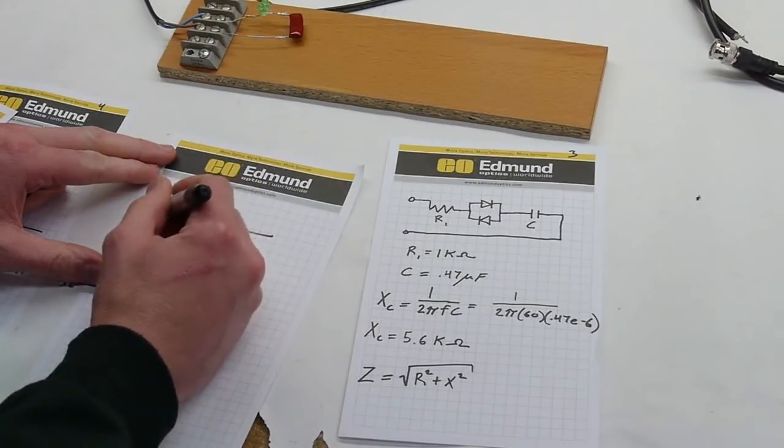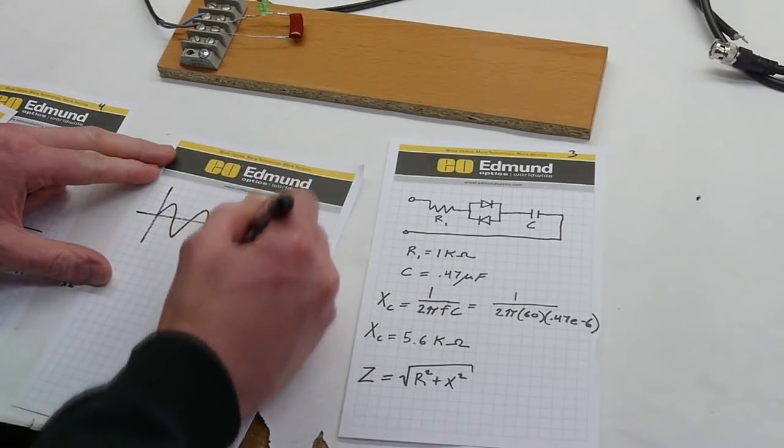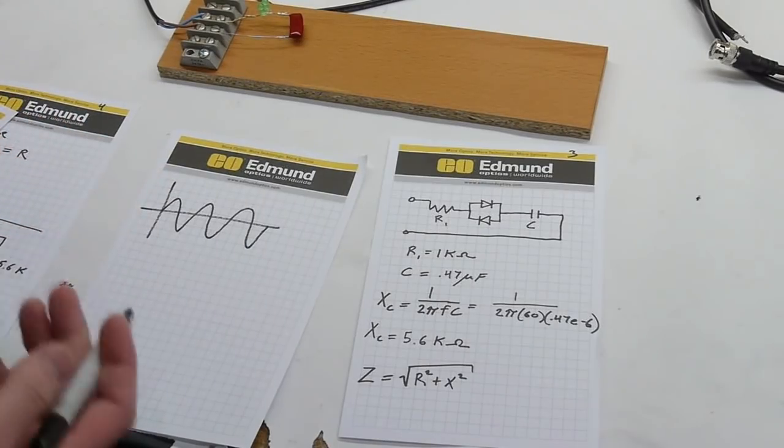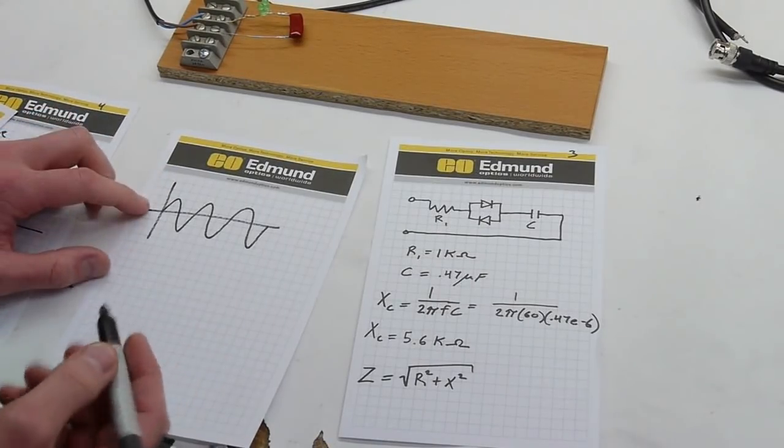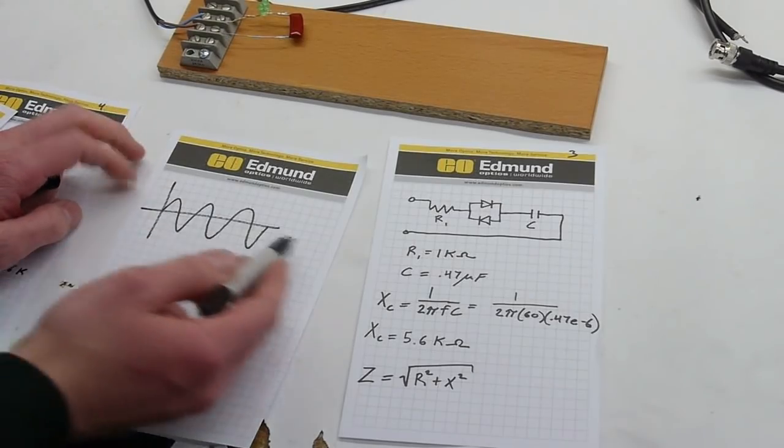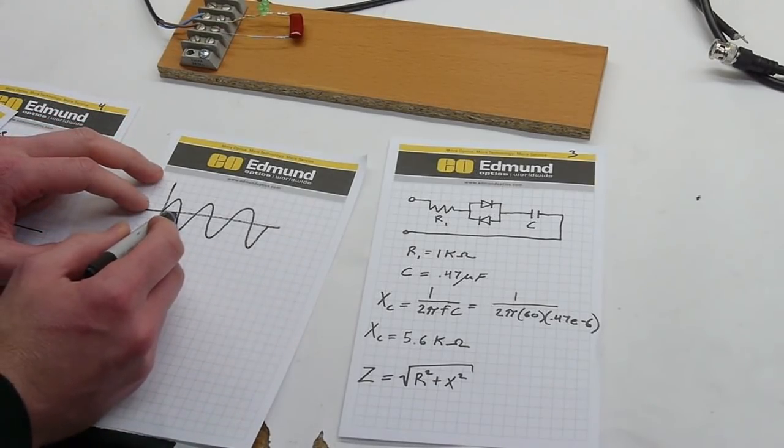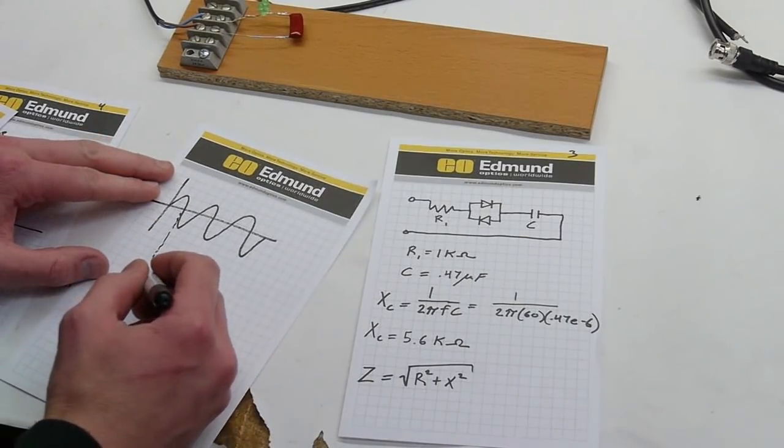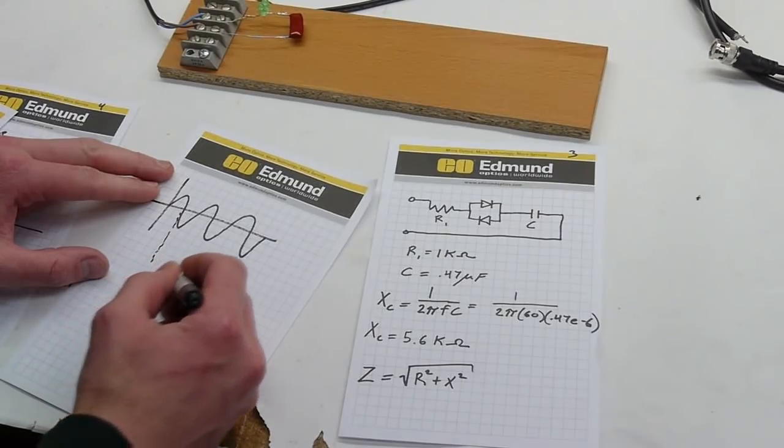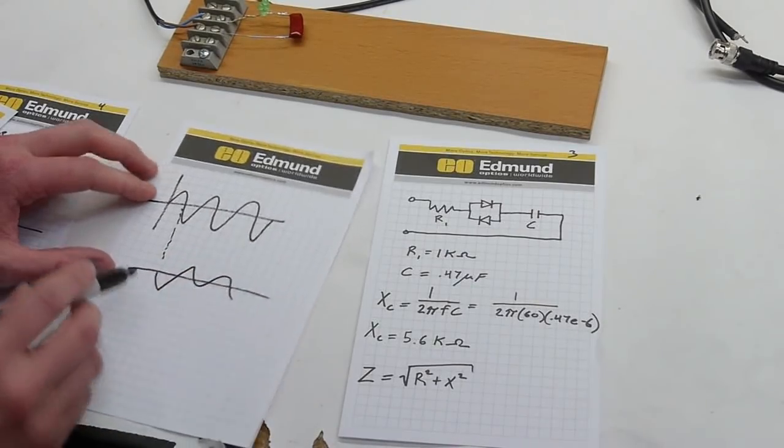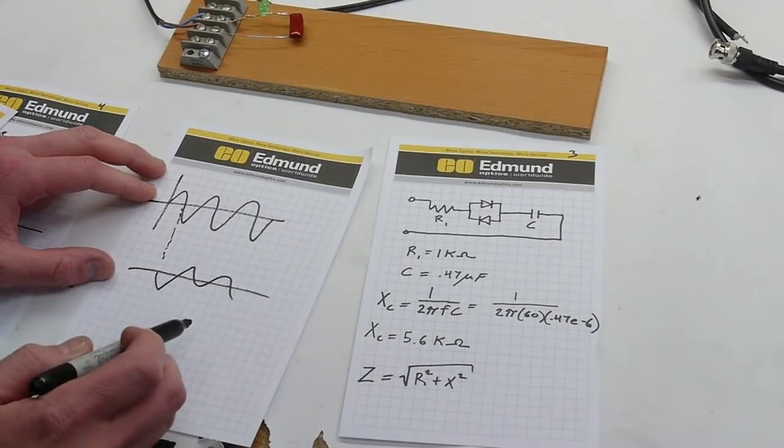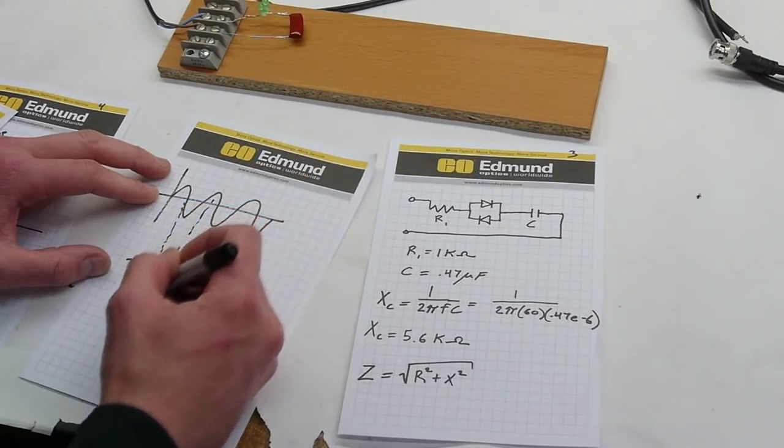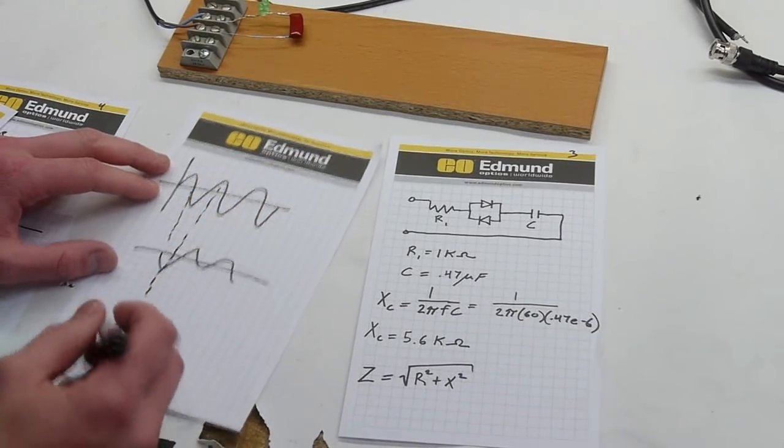In AC current, we have a cycle that looks like this. And at some point, we have to build our circuit and then plug it into the wall. So if we happen, and this is just running constantly, so if we happened to plug in our circuit right at this point in time, everything would be great. The circuit would see a wave that was nice and starting at zero and flowing up and down normally. But what happens if we decided to plug in our circuit here?